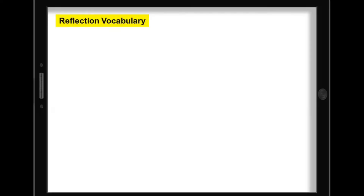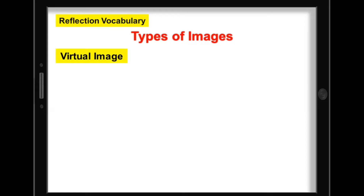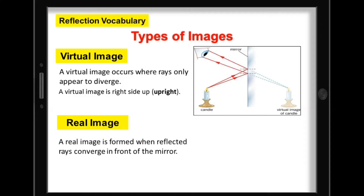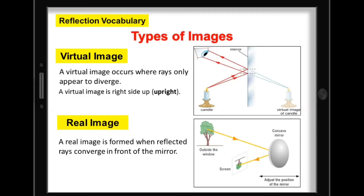It is very important to know the type of image formed by any optical device such as a mirror. There are two types of images: virtual image and real image. A virtual image occurs where rays only appear to diverge, and a virtual image is always upright. A real image is formed when reflected rays converge in front of the mirror. A real image is always inverted or upside down and can be projected on a screen.